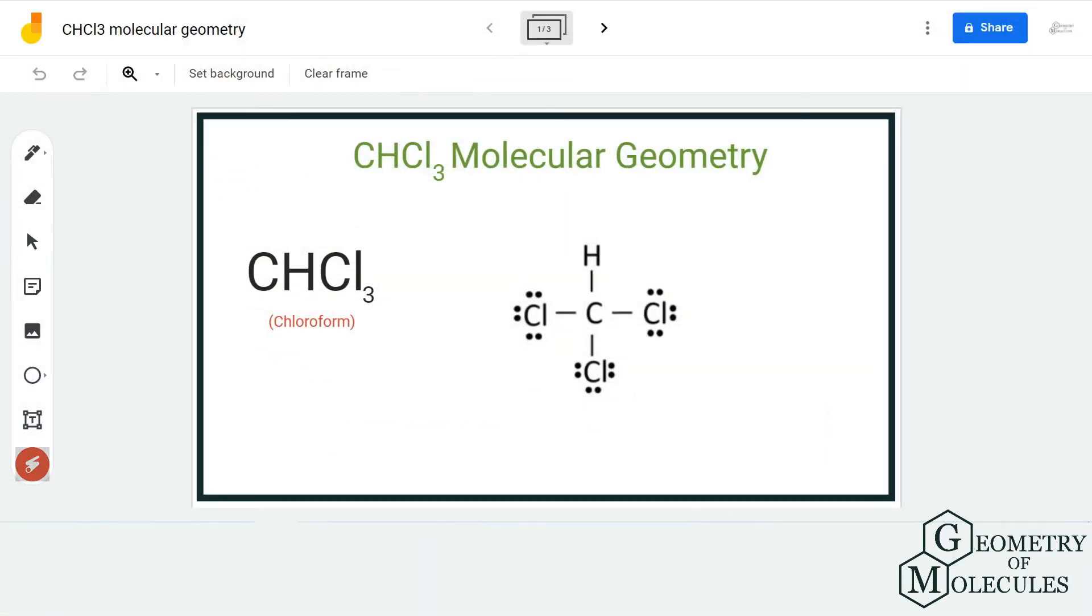Hi guys, welcome back to our channel. In today's video we are going to help you determine the molecular geometry of CHCl3. It is made up of one carbon, one hydrogen, and three chlorine atoms.